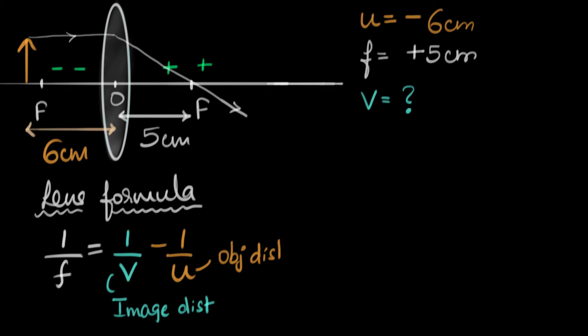Alright, let's do this. So, if we substitute, we get one over plus five, plus five, that would be equal to one over v. V I don't know, minus one over u, which is minus six.